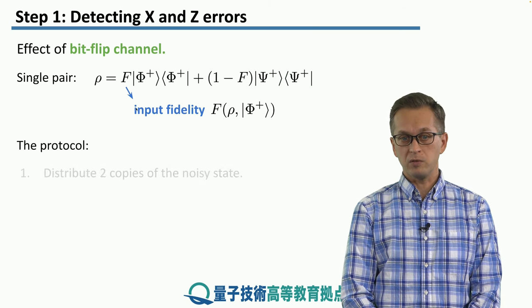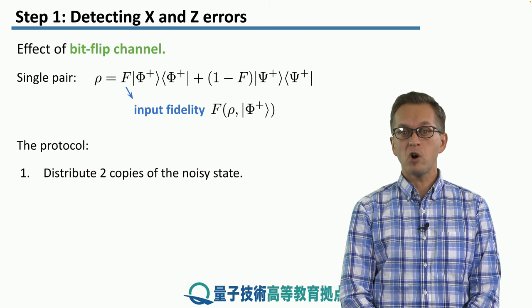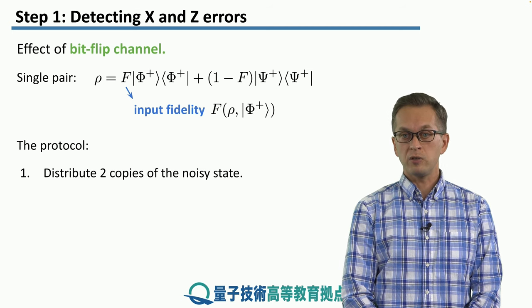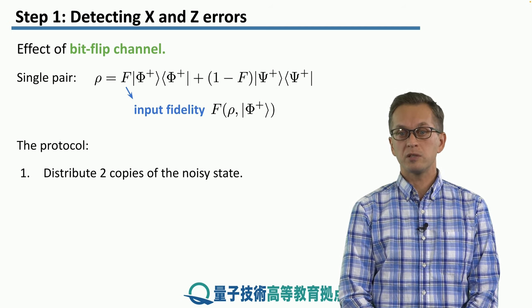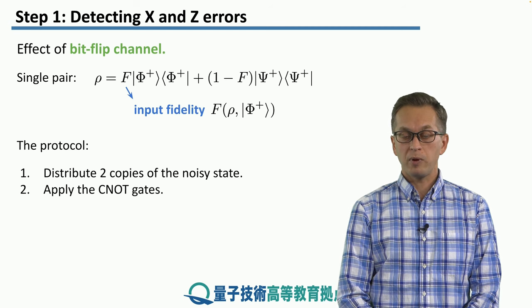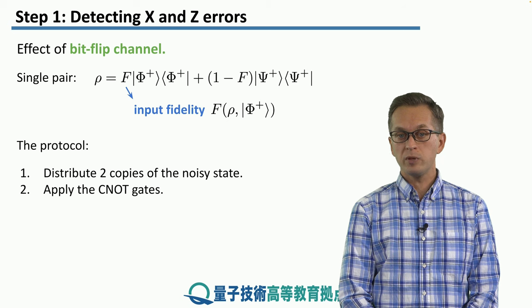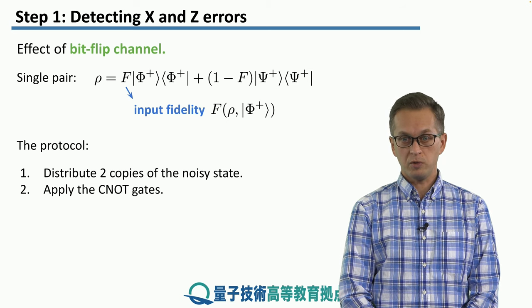And the protocol goes as follows. We distribute two copies of this noisy state. Two qubits are in possession of node A and two qubits are in possession of node B. We apply the CNOT gates where the controls are the pair one qubits and the targets are the pair two qubits.